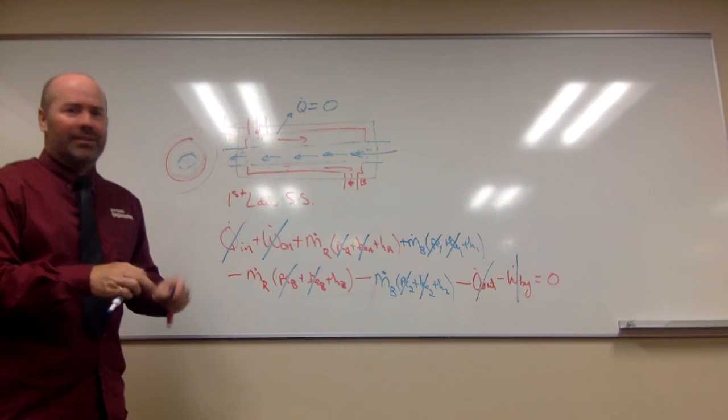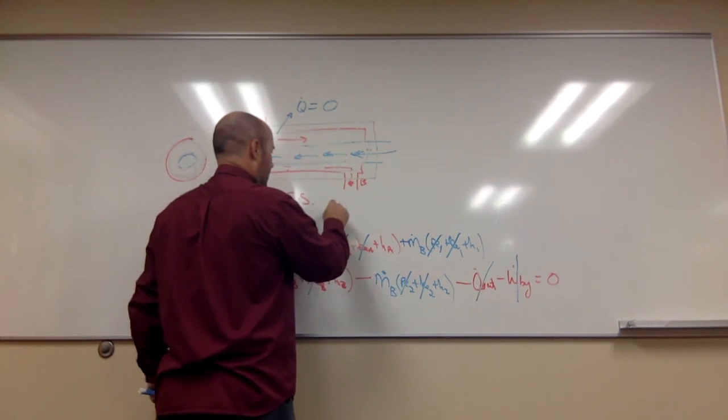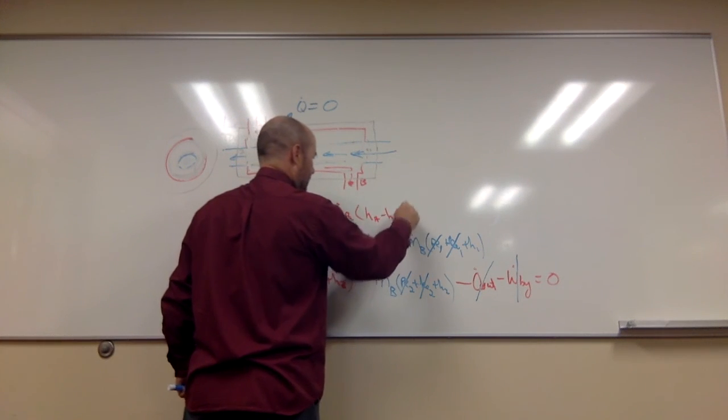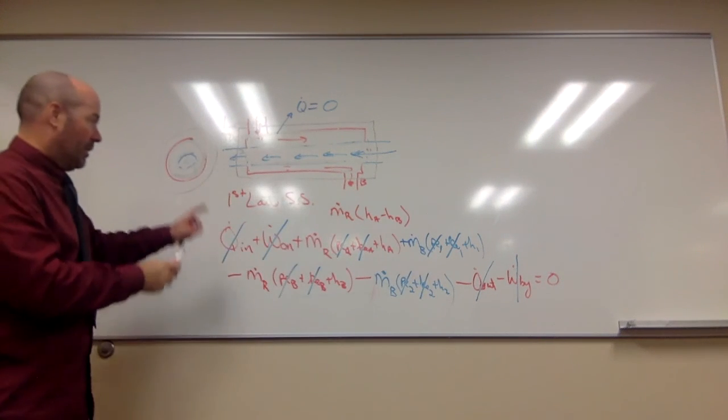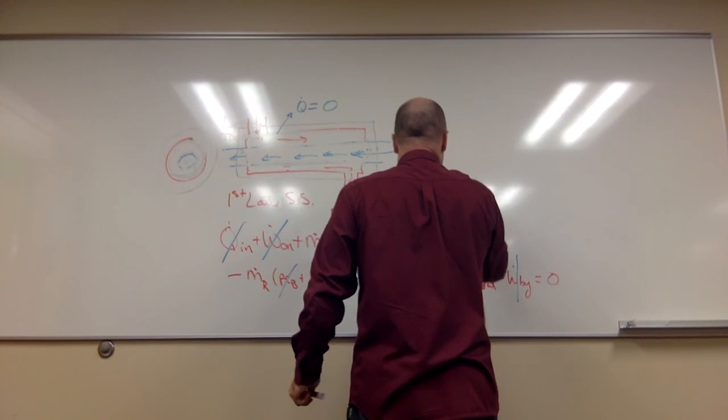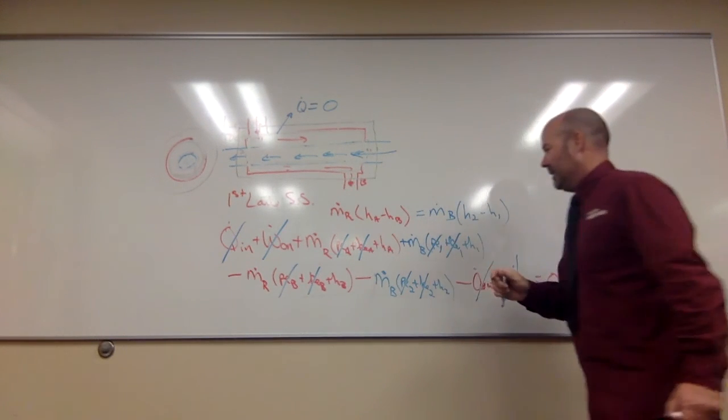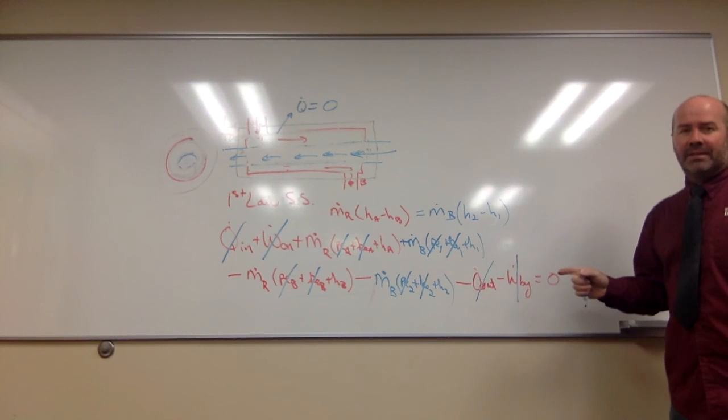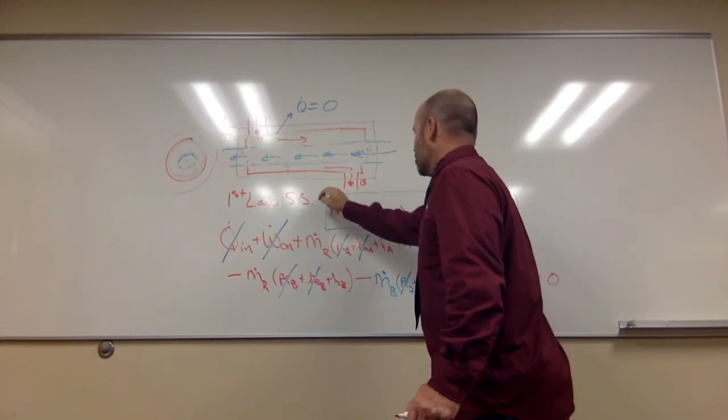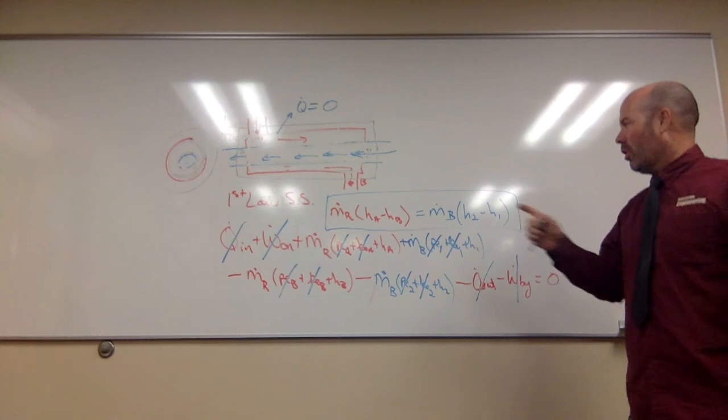So, what's left? Oh, it's all about that H. Basically, we have M dot R times H A minus H B on the left side of the equation equals M dot B times H 2 minus H 1. That's all that's left. That's the steady state equation for a heat exchanger if you consider both fluids. All about that H.